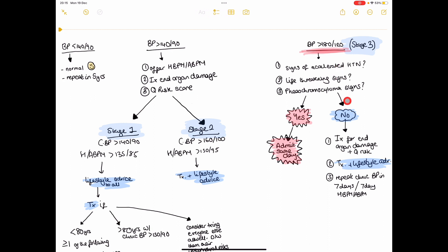If we don't have any of those signs, then we can relax slightly. We start the investigations for end organ damage and doing a Q-risk just like the rest of the hypertensive patients. We treat these patients straight away and you want to call them back into clinic in seven days time or send them home with seven-day home blood pressure monitoring just to make sure that blood pressure is coming down.